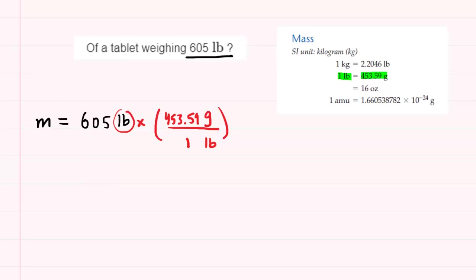So we will go ahead and multiply. The pounds will cancel out. And when you multiply these together, you're going to get a pretty large mass here. It's going to be 274421.95 grams.